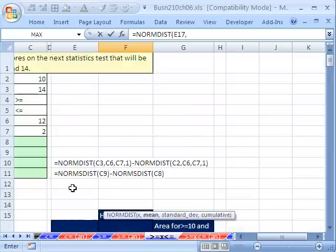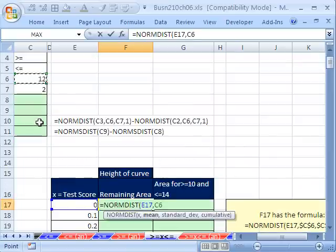Comma, I need my mean which is that 12, F4, comma, standard deviation, click there and hit F4 to lock it, comma, and then cumulative. I need a 0 here. Don't forget, this is for the probability density function.